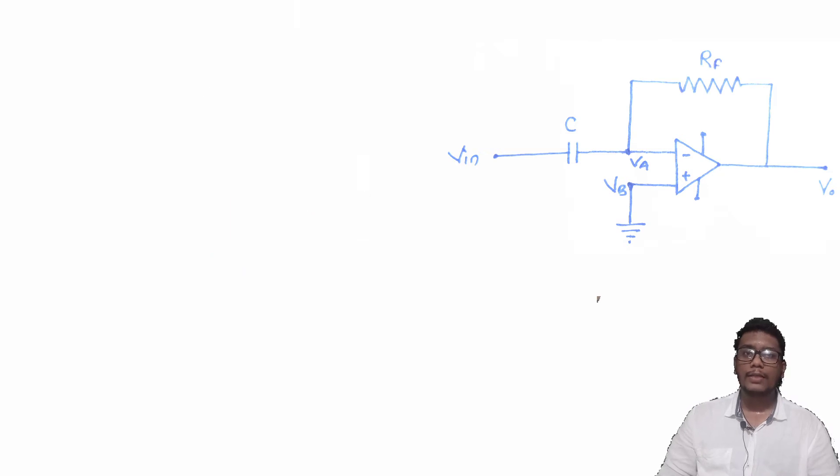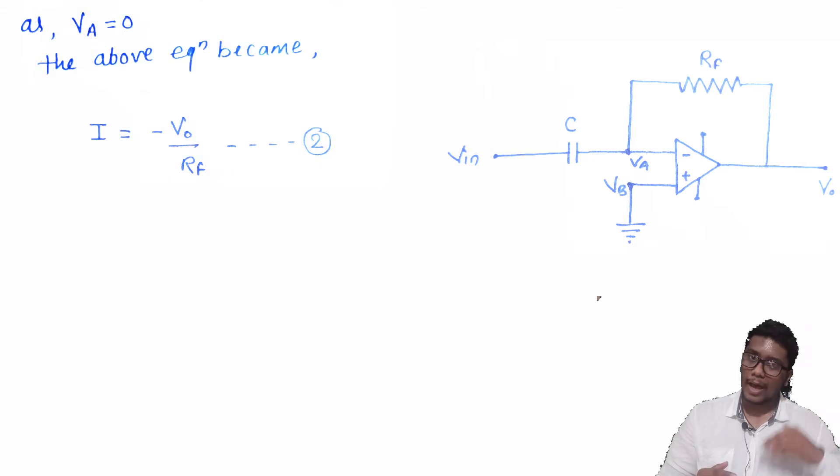Again we know the value of VA is zero. So the equation will become I is equals to minus VO upon RF. This equation will become equation number two.